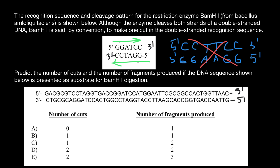Now let's check the given sequence on the top strand. We are looking for GG followed by ATCC. Scanning through: GA — no; CG — no; CG — no; then we find GG followed by AT and CC — exactly what we see in the recognition sequence. Let me highlight it: GG, AT, and CC. That's a match.